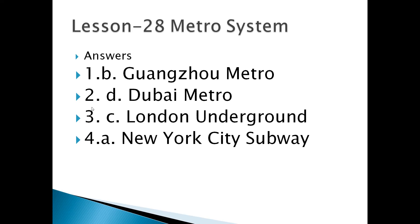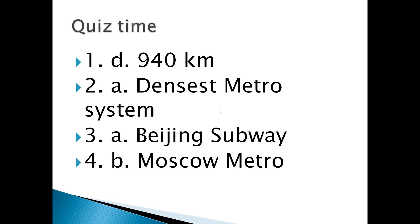Number 4: the metro system with the largest number of stations in the world is the New York City subway. For the quiz: the world's longest metro route length is 940 km. Number 2: Paris metro has the fastest metro system. Which of the following is the world's most busiest metro system? Beijing subway. Number 4: which is also known as the underground palace? Moscow metro.